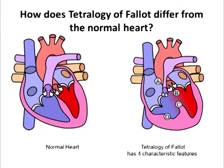So how does Tetralogy differ from the normal heart? If we look at these two diagrams we can see that the normal heart has a blue and a red side. There are two pumps — the right and left ventricle. The right ventricle pumps blue blood to the lungs and the left ventricle pumps red blood around the body.